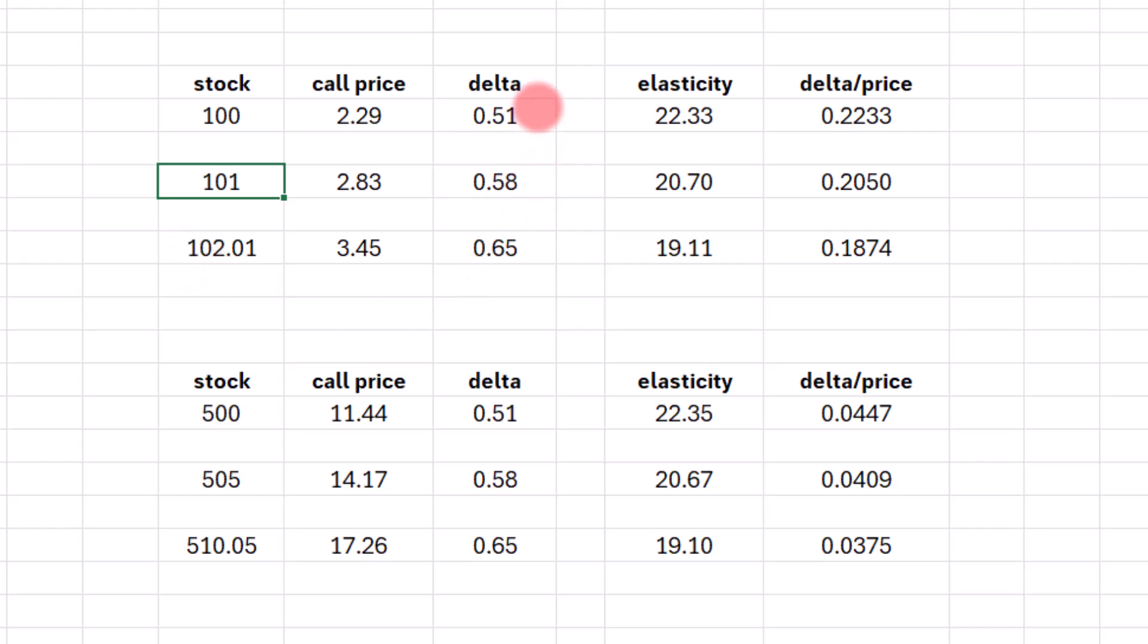We generated different deltas, 51, 58, and 65. Now in this column, we're looking at the elasticity calculation that I just talked about. We're going to take the stock price times the delta and divide it by the call price.